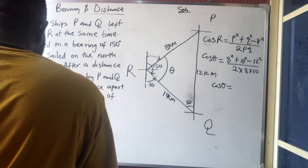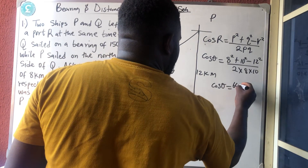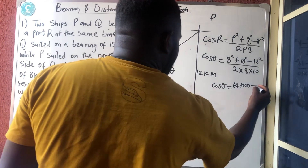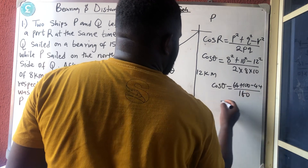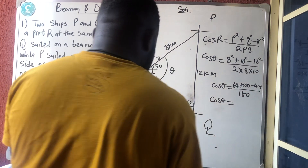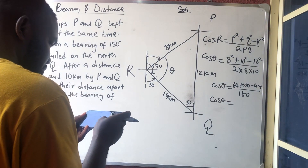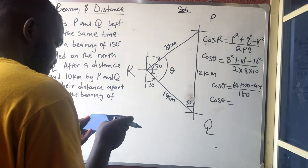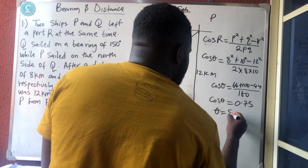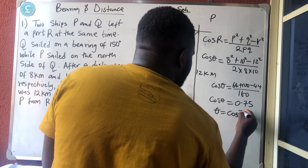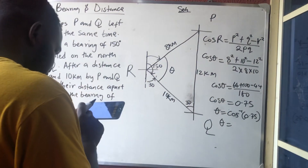Working that out: 8 squared is 64, plus 100, minus 144, all over 160. That gives us 20 divided by 160, which equals 0.75. So cos θ = 0.75, and therefore θ equals cos inverse of 0.75.